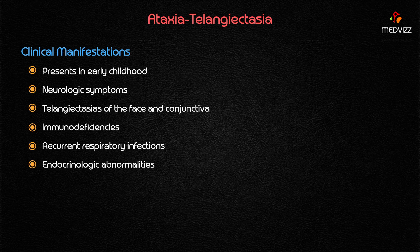Because the condition is progressively deteriorating, ataxia generally starts around 24 months and is more prominent by age three, explaining the typical early childhood presentation. There will also be telangiectasia of the face and conjunctiva. So the features are: cerebellar ataxia plus telangiectasia of the face and conjunctiva.